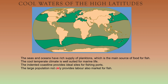Indented coastlines provide ideal sites for fishing ports. Indented means those coastlines which are broken, and they help in anchoring of vessels, therefore becoming ideal sites for fishing. Apart from that, all these areas have large populations which provide labour and also a very distinct market for fish.